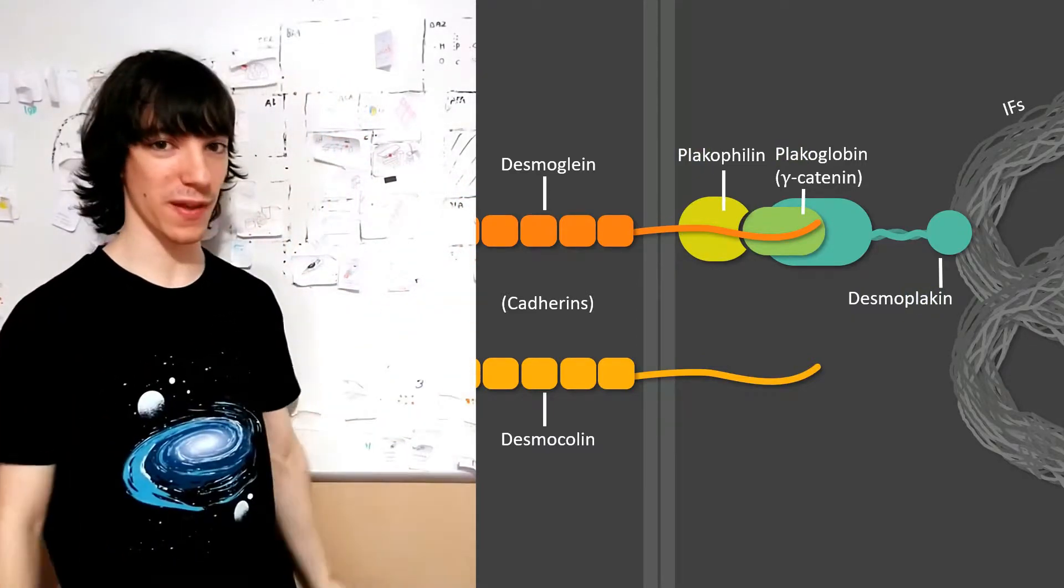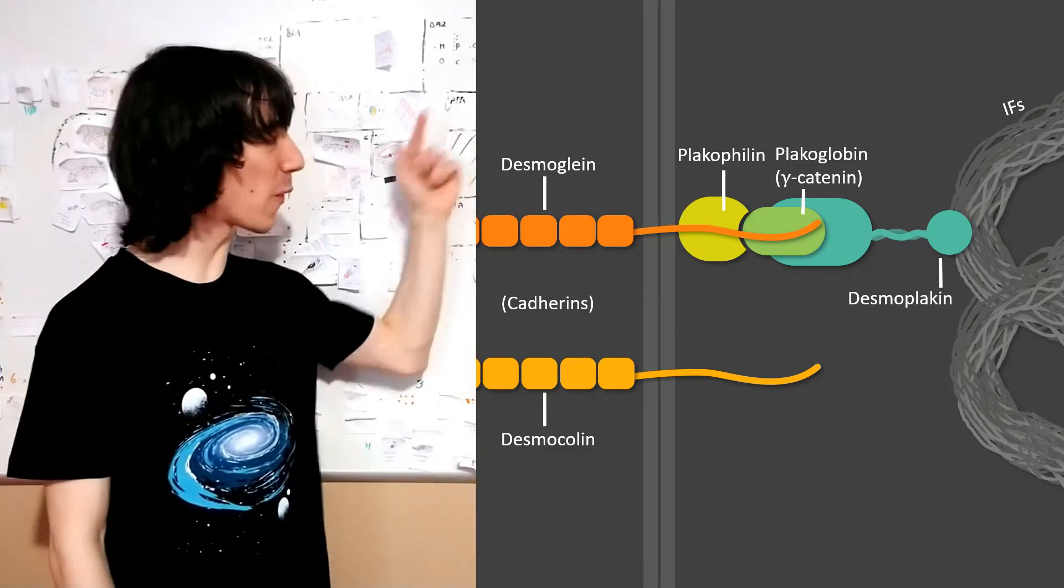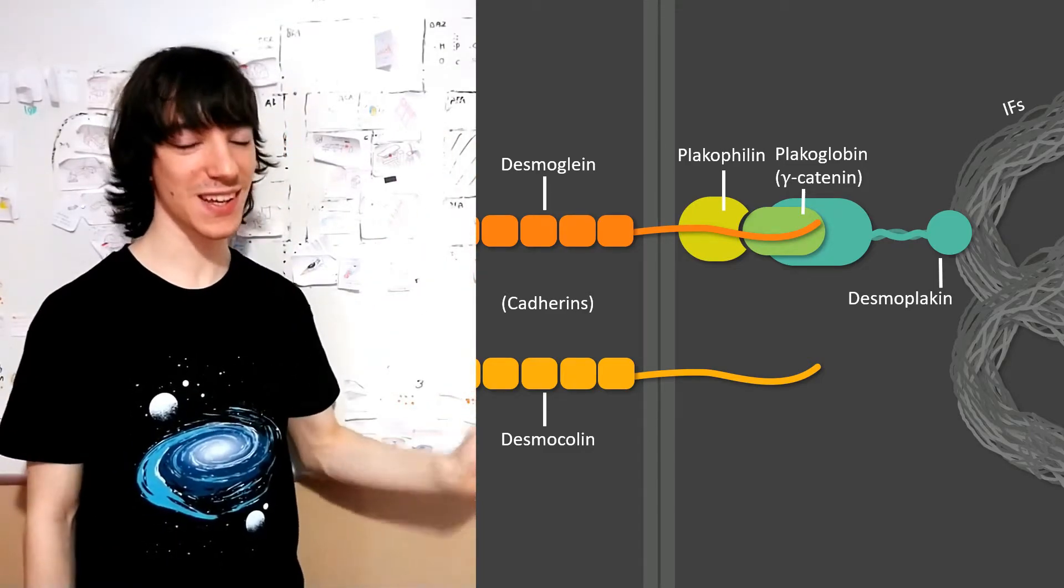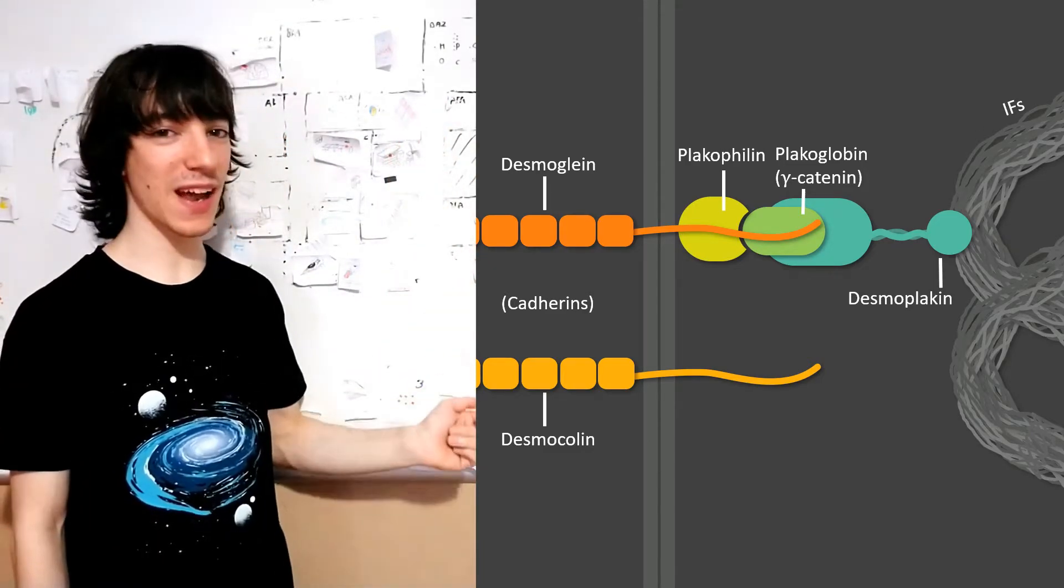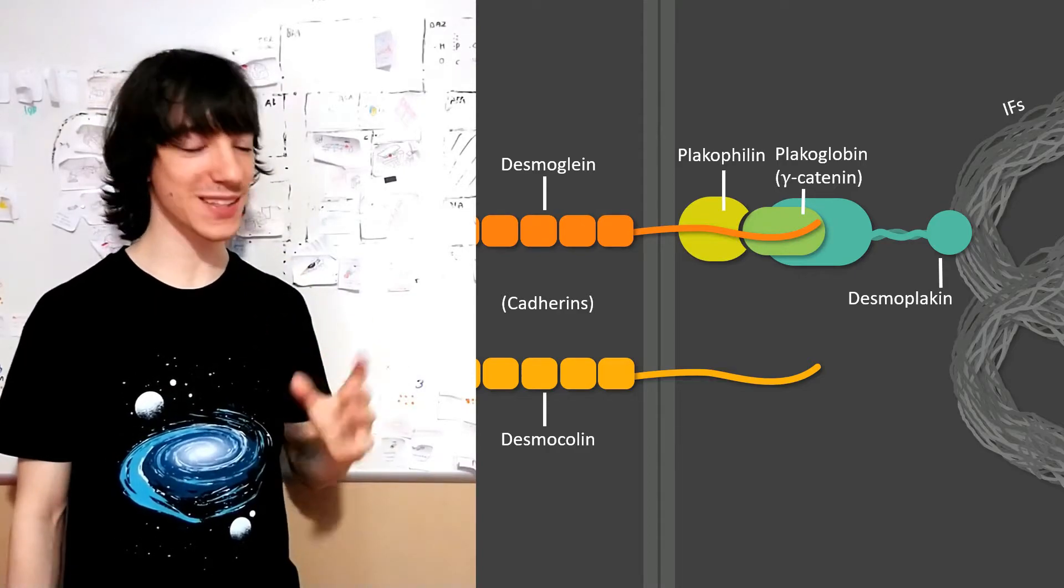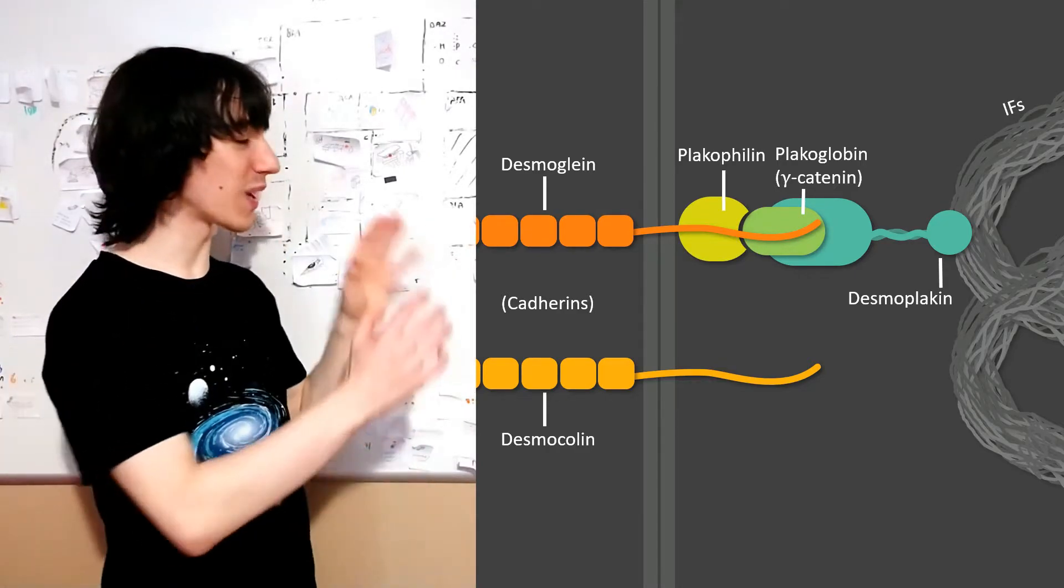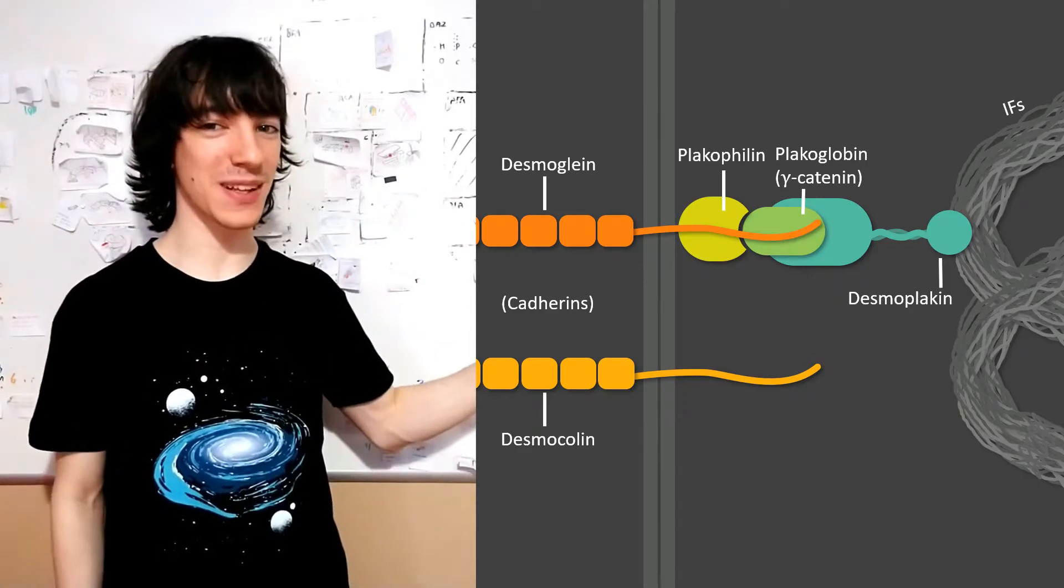By the way, don't mix up all those three desmo things. Desmoglein and desmocollin are transmembrane proteins, cadherins. And desmoplakin is an adapter between cadherins and intermediate filaments.